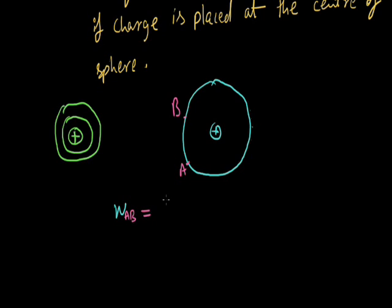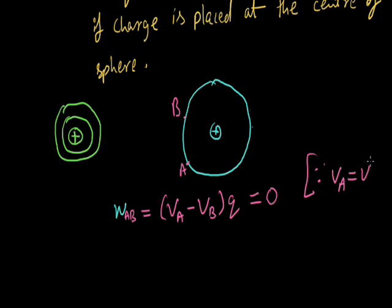That will be W_AB equal to (V_A minus V_B) into Q, and that will be zero, because V_A equals V_B—potential is same.